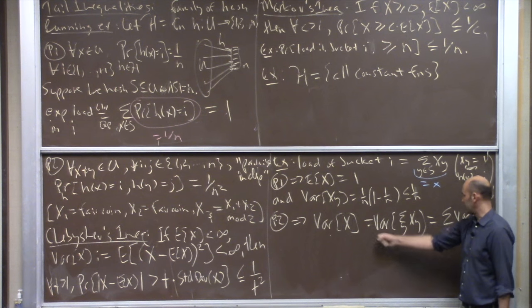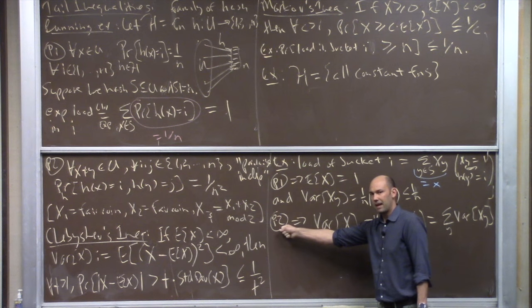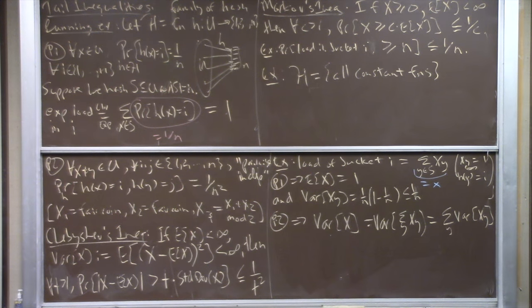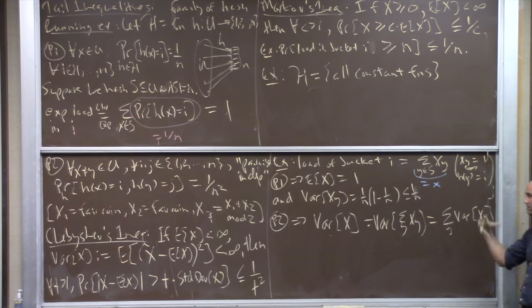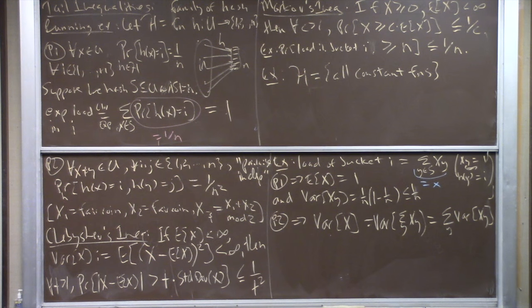The takeaway from Chebyshev: if the best thing you can say about a random variable is something about its variance, Chebyshev is what you want. The key pattern: decompose the complicated random variable into a sum of pairwise-independent random variables, analyze each variance separately, sum them up to get the total variance, and then apply Chebyshev. Markov is for when you truly can't say anything beyond the expectation.